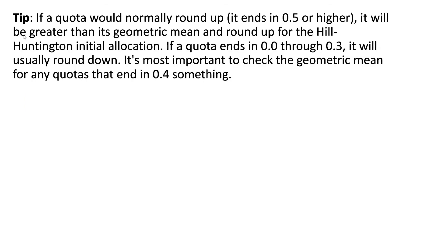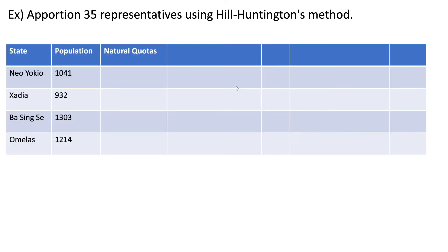One tip: if a quota would normally round up — meaning it ends in 0.5 or higher — it will be greater than its geometric mean and round up for the Hill-Huntington initial allocation. If a quota ends in 0.0 through 0.3, it will usually round down. It's most important to check the geometric mean for any quotas that end in 0.4 something.